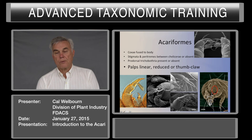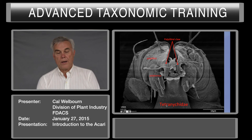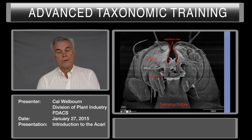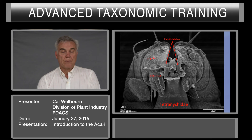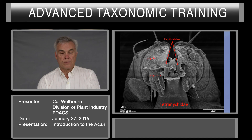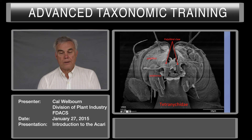Here's another example: the palp tarsus and the palp tibial claw-like seta. Here we're looking at the anterior end of a tetranychidae. These are the palps, the palp tibia, and the palp tibial claw-like seta or claw. Here's the palp tarsus. On the other side, you can see the palp tarsus, the palp tibia, and the claw or claw-like seta. This particular seta here is the spinneret — this is where spider mites that produce silk produce it from.